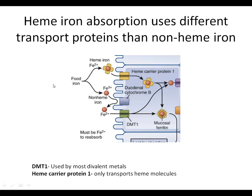The reason that iron from plant sources is absorbed less efficiently has to do with the carriers — the transport proteins that our intestines have. There are two different transport proteins that can bring iron into intestinal cells, and from there they pass it on to the bloodstream. Those are heme carrier protein 1 and a carrier called DMT1.